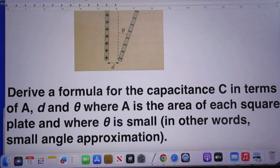Derive a formula for the capacitance C in terms of A, d, and theta, where A is the area of each square plate and where theta is small. In other words, small angle approximation.